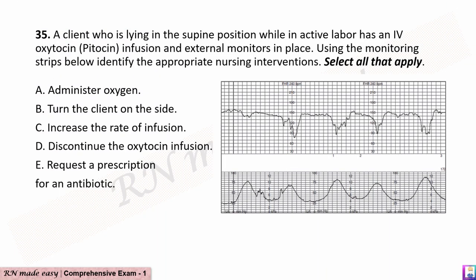Question 35. A client who is lying in the supine position while in active labor has an IV oxytocin (Pitocin) infusion and external monitors in place. Using the monitoring strips, identify the appropriate nursing interventions. Select all that apply. A. Administer oxygen. B. Turn the client on the side. C. Increase the rate of infusion. D. Discontinue the oxytocin infusion. E. Request a prescription for an antibiotic.